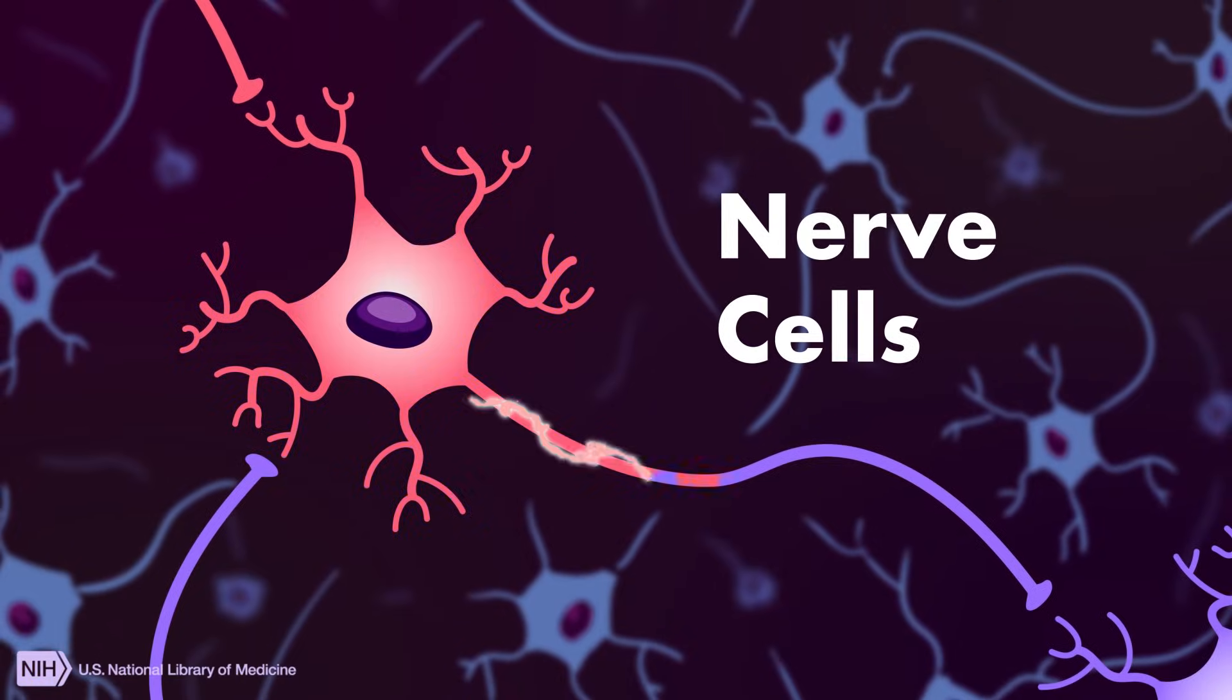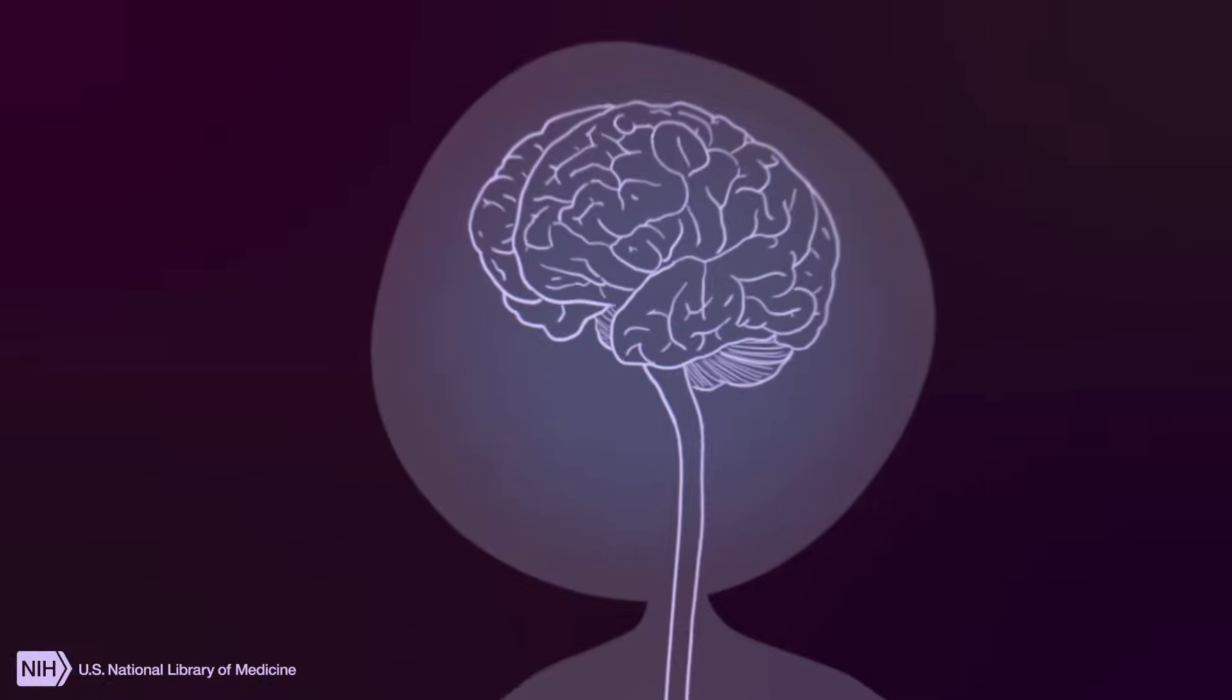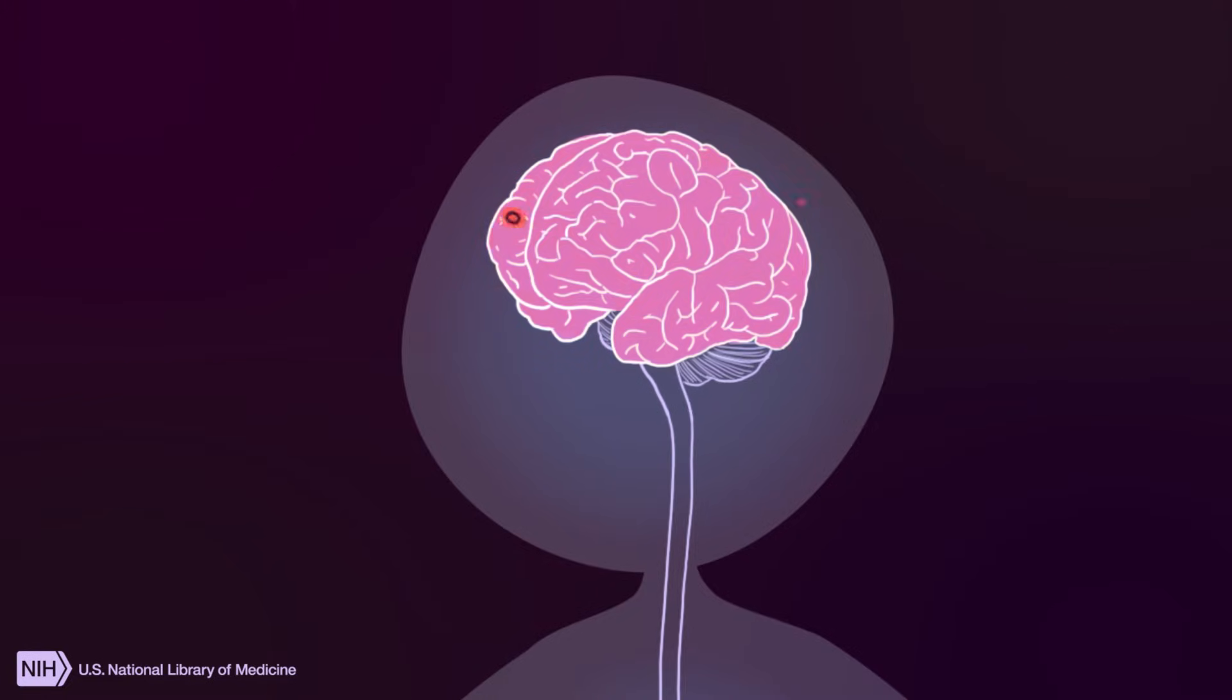Opioid receptors are found on nerve cells all around the body. In the brain, opioids produce feelings of comfort and sleepiness.